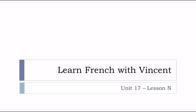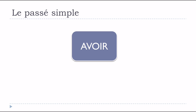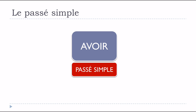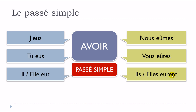Bonjour à tous and welcome to Learn French with Vincent. This is Unité 17, Leçon N — we'll cover the verb AVOIR, to have. AVOIR au passé simple: j'eus, tu eus, il eut, elle eut, nous eûmes, vous eûtes, ils eurent, elles eurent.